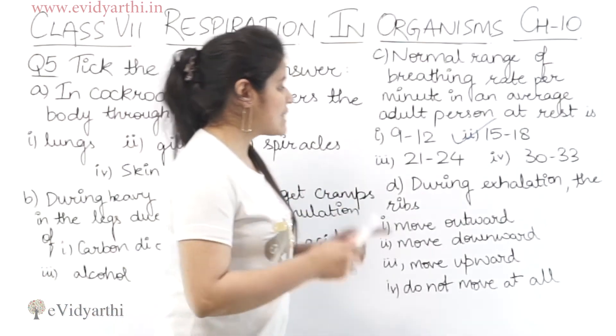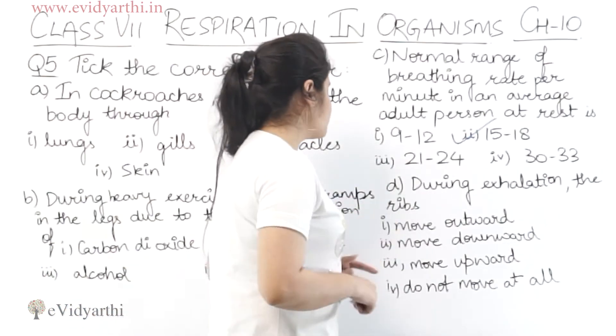Next part: during exhalation, the ribs move — outward, downward, upward, or do not move at all. जब हम exhale करते हैं — inhale means जब हम air को body के अंदर लेते हैं, exhale means जब air को हम बाहर छोड़ते हैं। जब inhale करते हैं तो ribs upward और outward move होती हैं। So जब हम exhale करेंगे तो वह वापस अपनी position पर आएगा, means वह downward move करेगा।